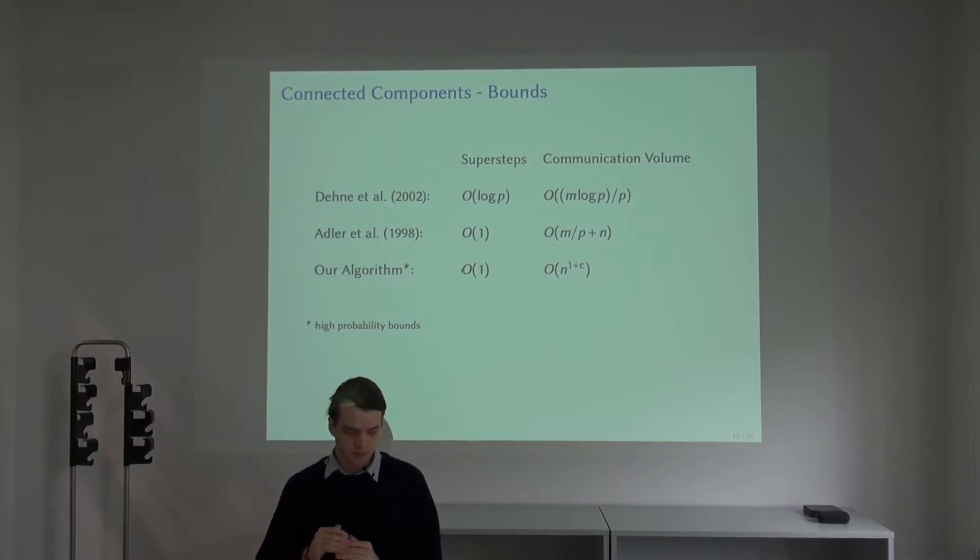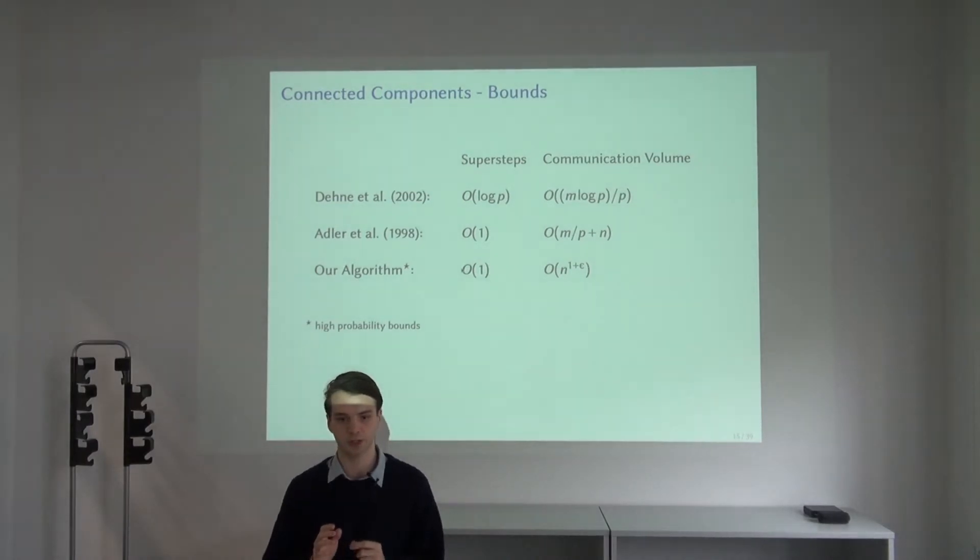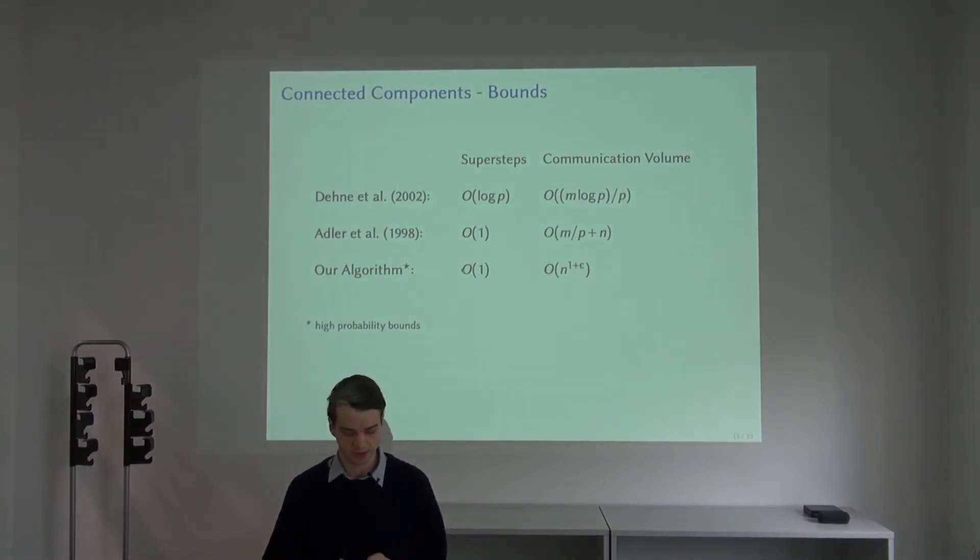Let's first start with a comparison with the theoretical results available in the model. You can see that there are two types of bounds. On the first bound, you see it has log P super steps, but the communication volume scales arbitrarily with the number of processors.